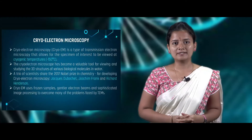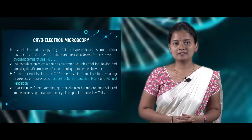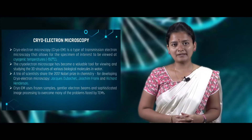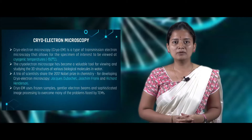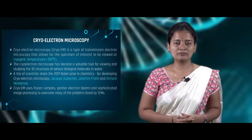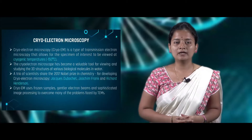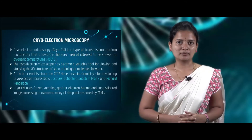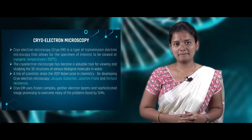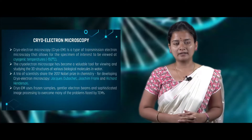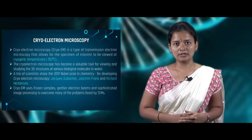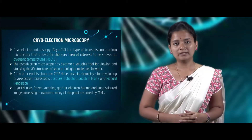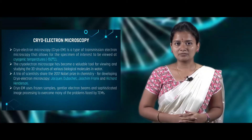The trio group of scientists — Dubochet, Frank, and Henderson — won the Nobel Prize in the year 2017 for the development of cryo electron microscopy. Cryo electron microscopy uses frozen samples, an electron beam, and image processing techniques to deduce the protein structure or any biological molecule's structure.